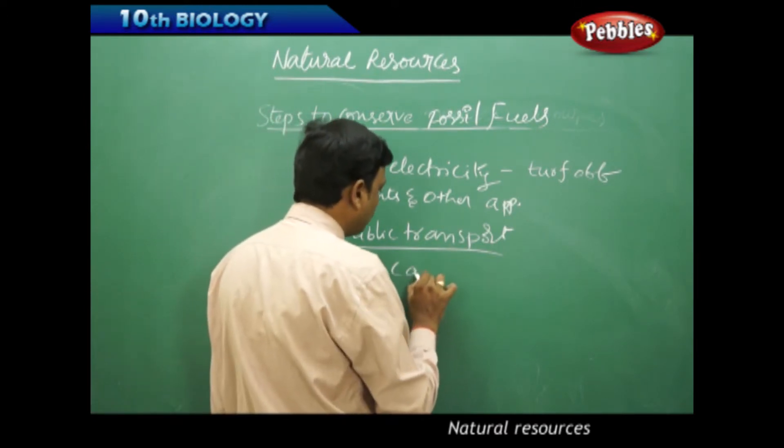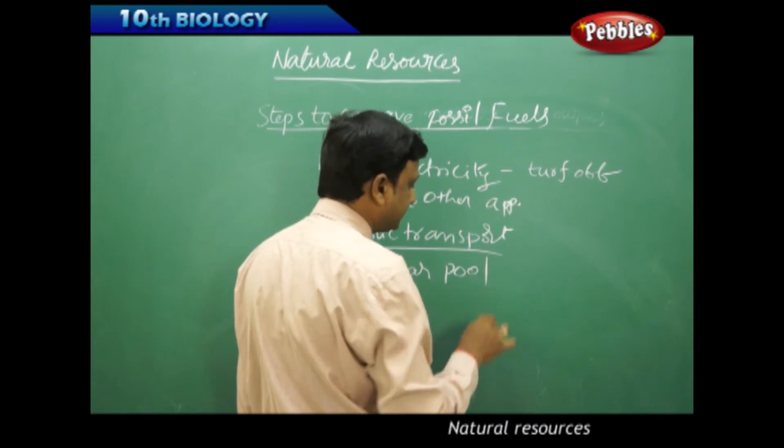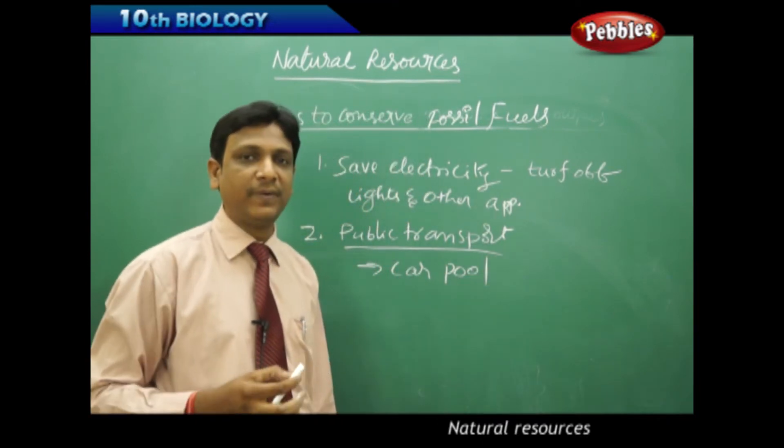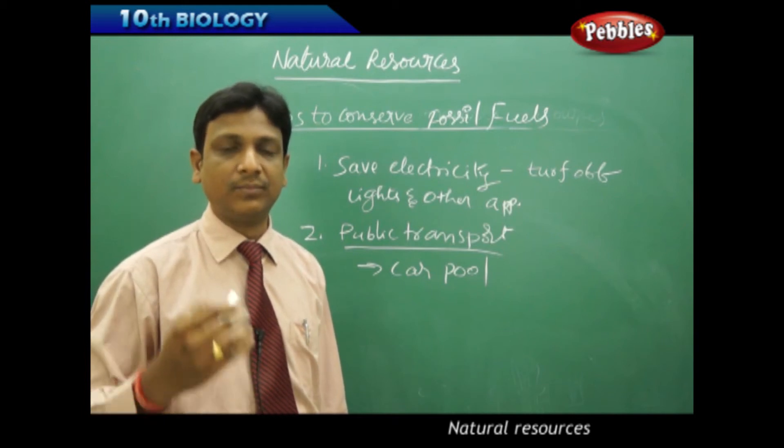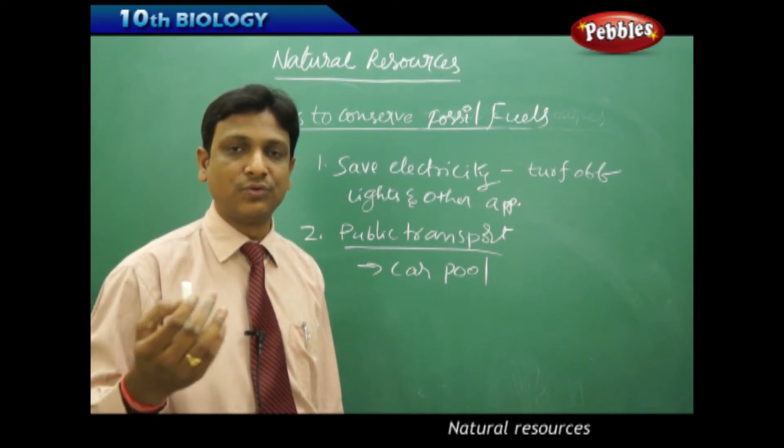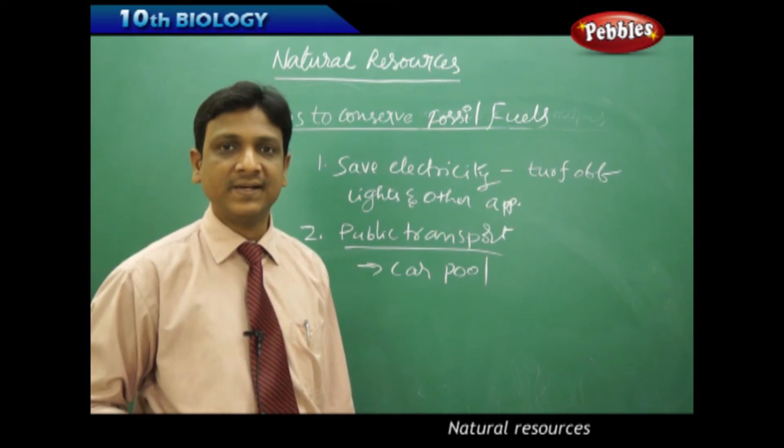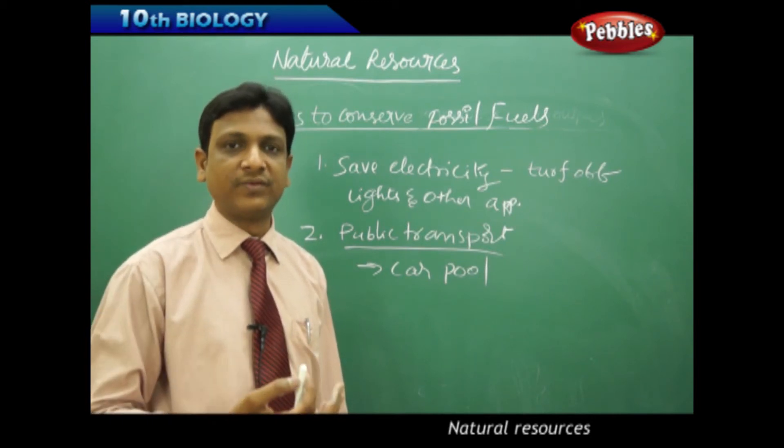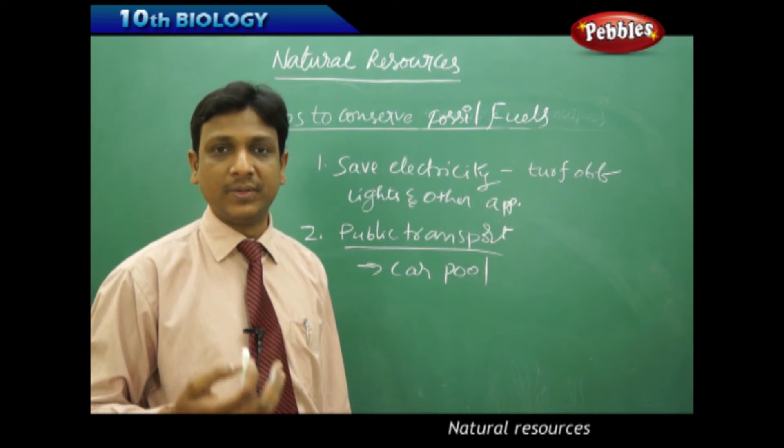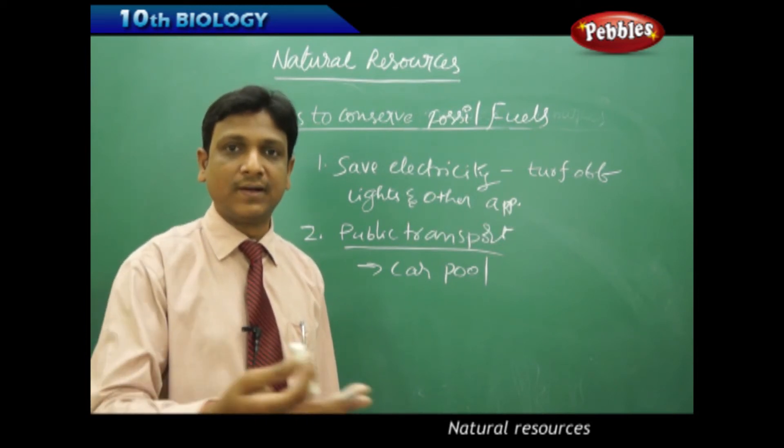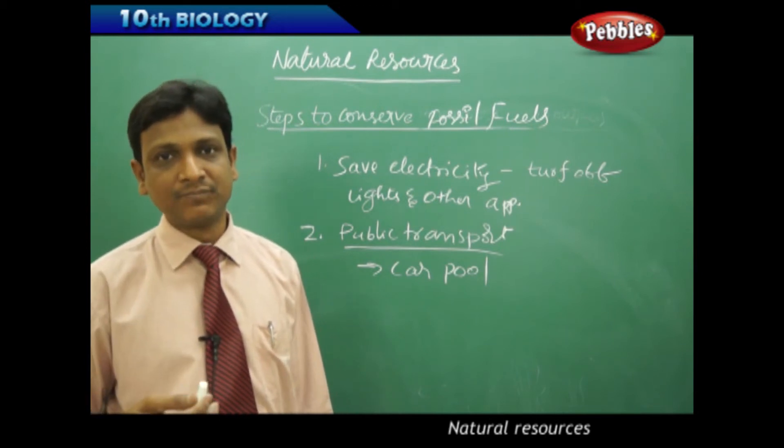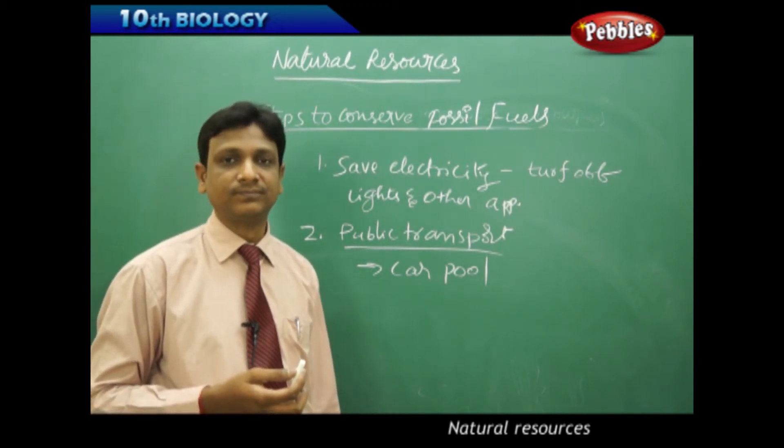So they can go for either carpool. Carpool means a group of people those who have to reach one destination. Say for example there is an office, Microsoft office they have to go to Microsoft office. All the employees they can take one car. Any one of the persons, for example seven people, for example five people are there. One day one person's car they can take and all the people can board it and travel. So that is called carpool.